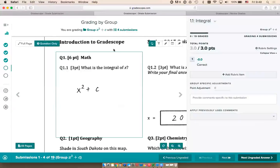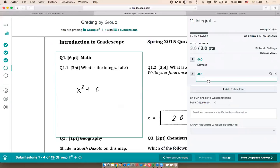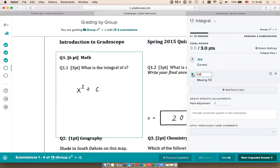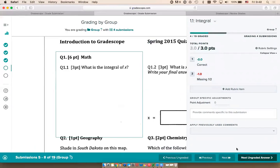Now when I go to grade, I'm seeing a very similar grading interface to what we looked at before with the basic grading interface, but now I'm grading four submissions at once. I'm grading all the students who answered x squared plus C. I can create that rubric item to describe the mistake of missing the one-half, decide to deduct one point, and check it off. When I go to the next answer, I'll see that I just graded four out of my 19 students. This can be very useful for grading a lot of students at once, especially for questions where there are only a few correct answers or answer possibilities.